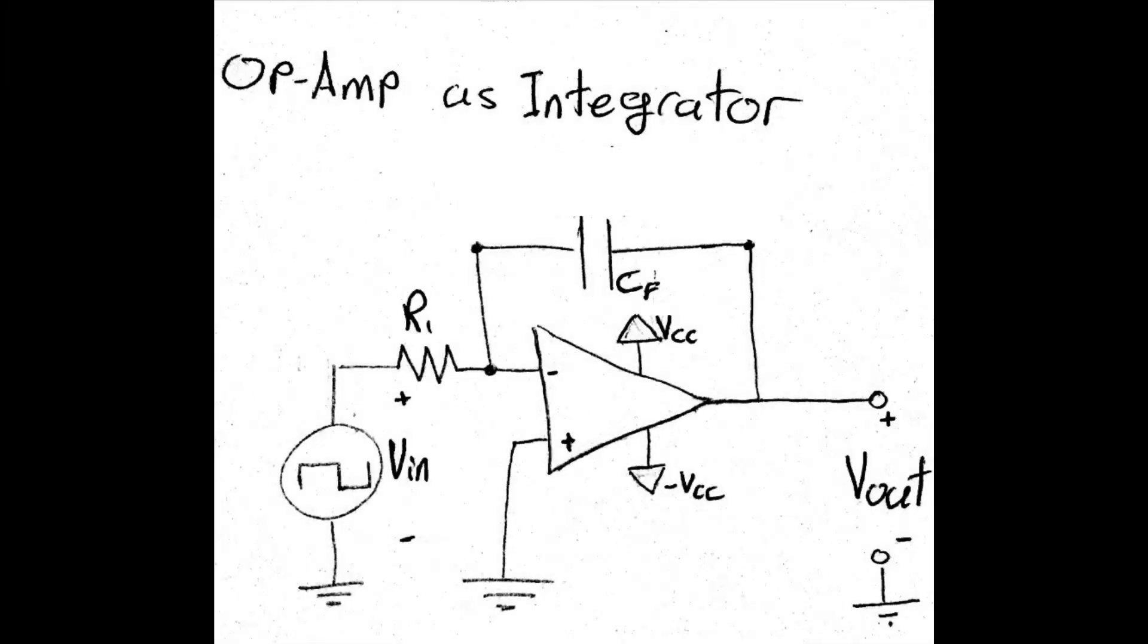At the first look at this circuit diagram, the first thing that may come to our mind is differential amplifiers, but here, instead of feedback resistor, we have a capacitor, and it's behind the integration functionality of the circuit. So to have a better understanding, let's have a closer look.